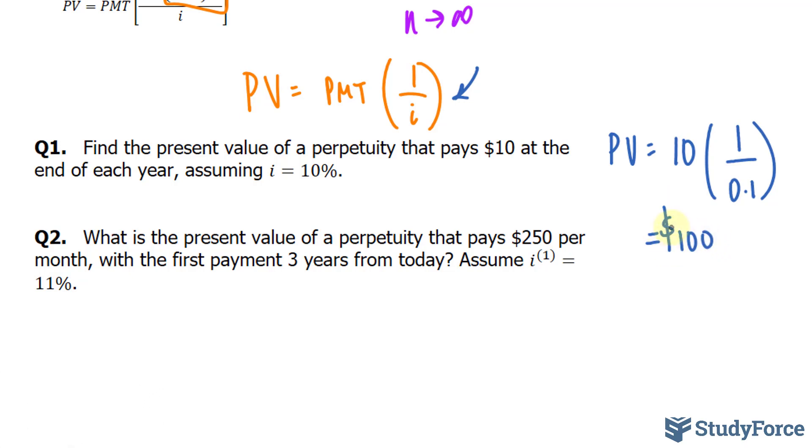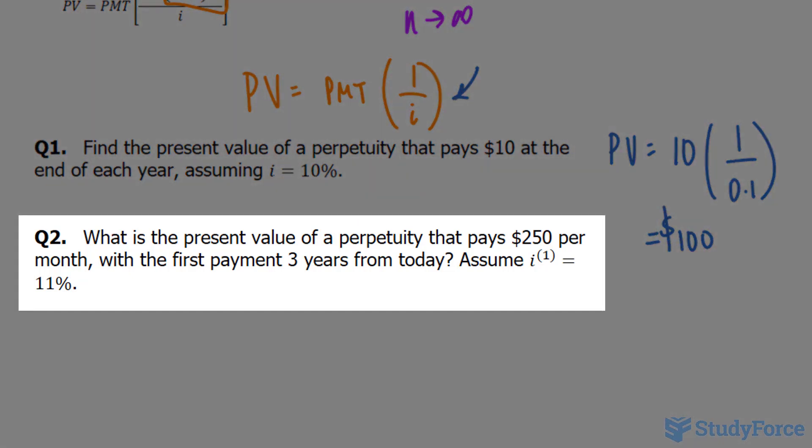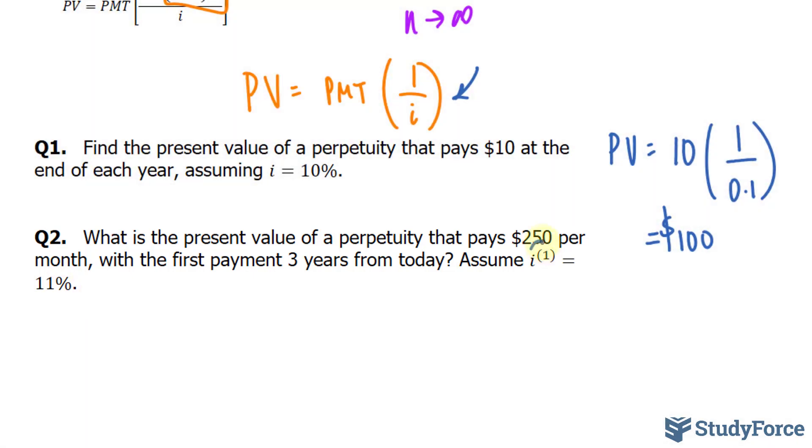That was an easy question. Let's move on to something a little more challenging. What is the present value of a perpetuity that pays $250 per month with the first payment three years from today? Assume that the interest is 11%, and notice the annotation here, i superscript 1, which means that this is annual interest being compounded annually.